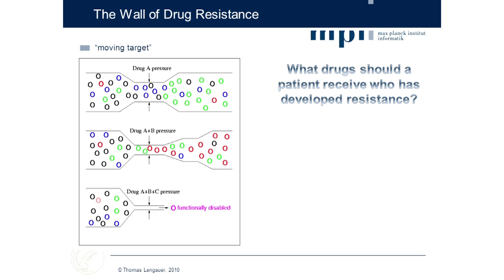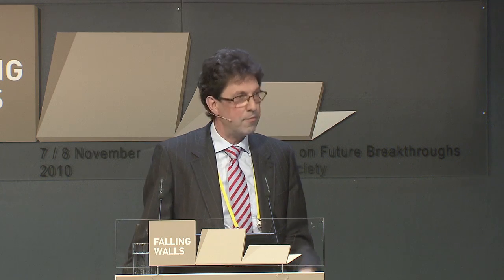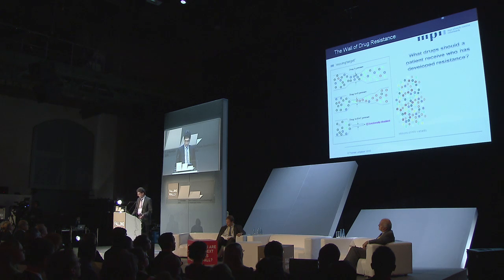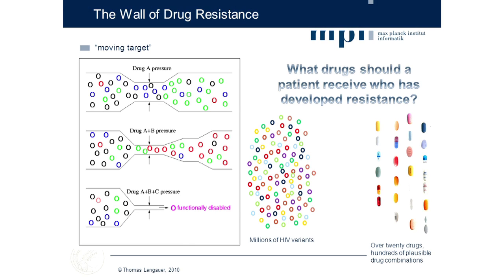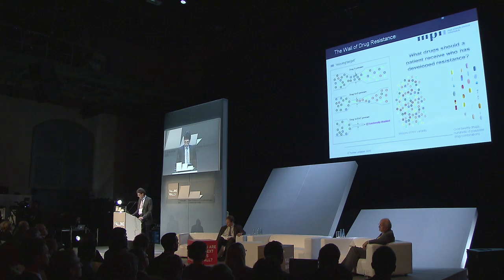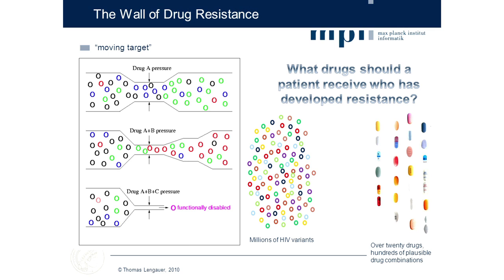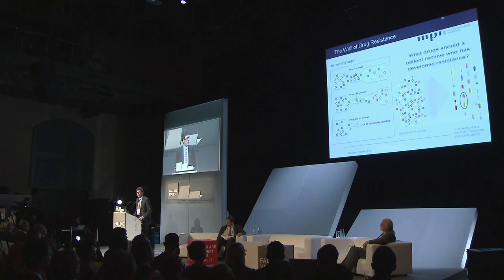So the major problem is: what drugs should a patient receive who has developed resistance? This is the central problem that doctors treating AIDS patients face today. Classically it has been solved through medical expertise, but it's becoming increasingly difficult because we have to deal with millions — probably billions — of virus variants. The number of drugs is also growing; we have over two dozen drugs, and we give several in combination, so there are hundreds or thousands of possible combination therapies. Finding the best drug combination on the basis of the viral population is clearly a problem that might be solved by computer.